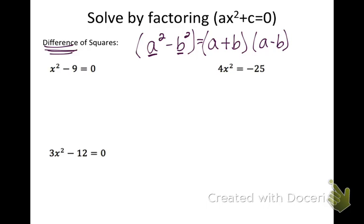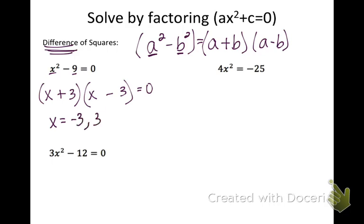On this first one we have x squared minus nine. X squared is a perfect square — x times x equals x squared. And nine is a perfect square — three times three equals nine. So we're going to take the square root of both: x and three for both of them, and put a plus and a minus in there. That's the factored form. Continuing to solve, we get x equals negative three and positive three. The negative three comes from the first parenthesis, the positive three from the second.